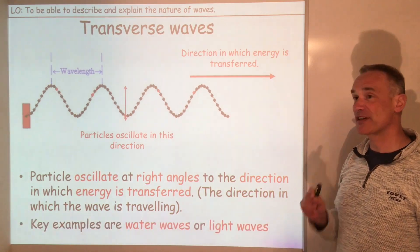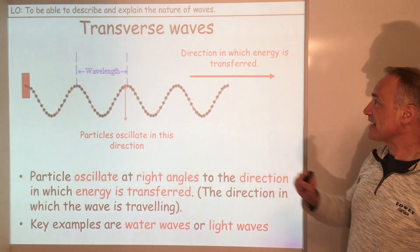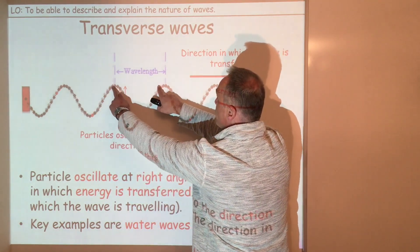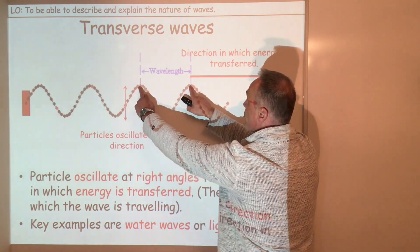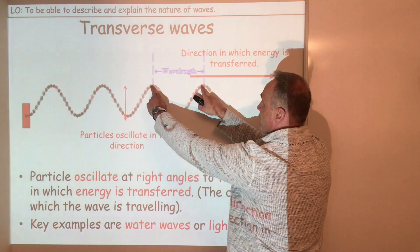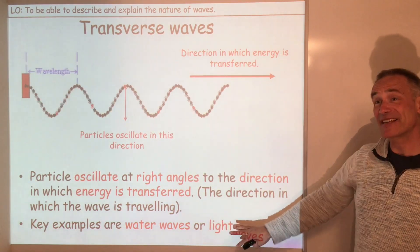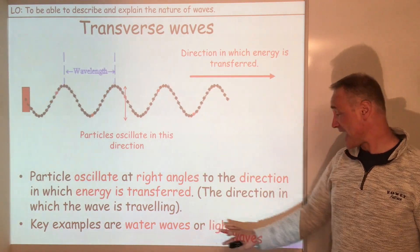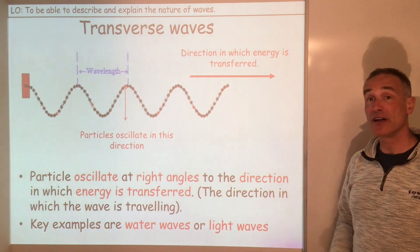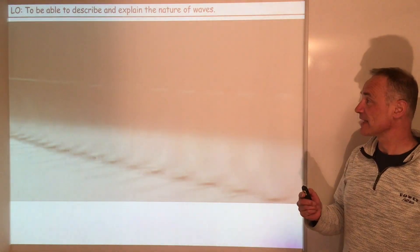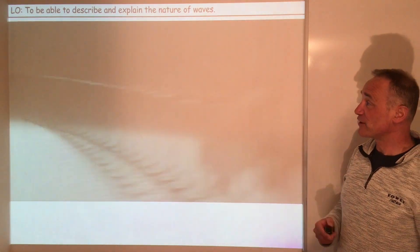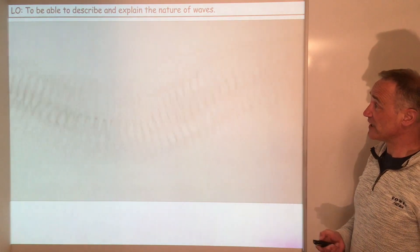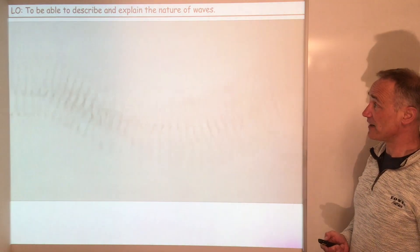You'll also notice that the wavelength is the distance between two points on the next wave. Key examples of transverse waves are water waves and also light. As you can see from this video, we can get transverse waves working on slinky springs like that.